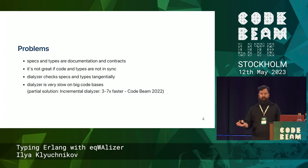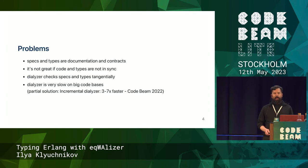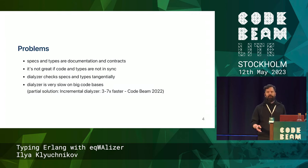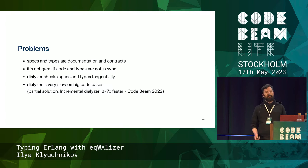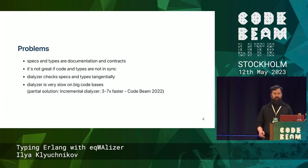However, once you start doing this you may run into some problems. Specs and types as documentation are basically contracts about what your code is supposed to do. It's not great if this documentation is lying, because instead of making code review faster you can make it slower — a reviewer may need to think about whether the documentation is correct. And Dialyzer, which was the only tool we had at that time, checks specs and types very tangentially.